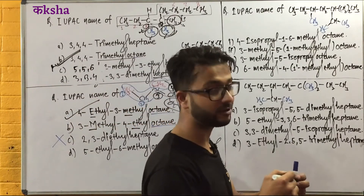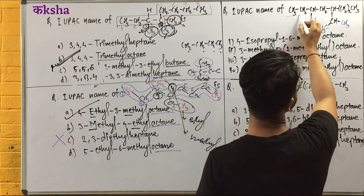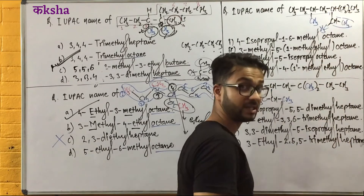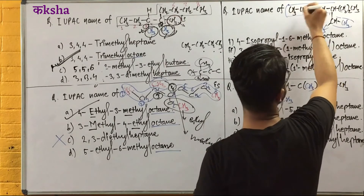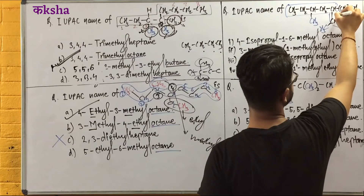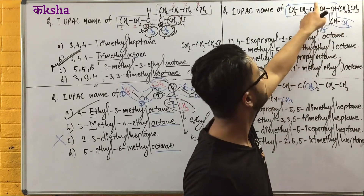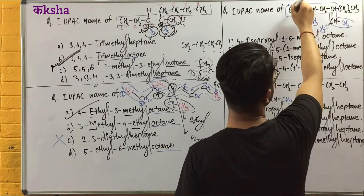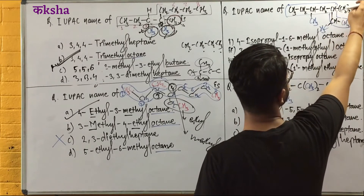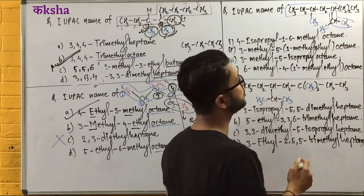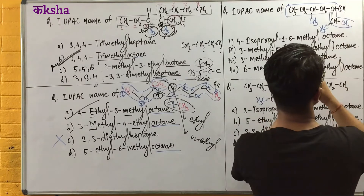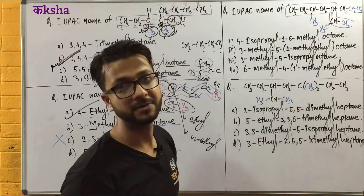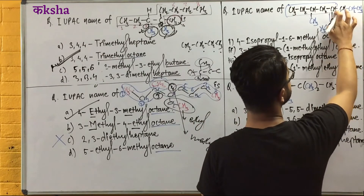The longest and continuous carbon chain selection — what is it? You can see it here. 1, 2, 3, 4, 5, 6, 7. You can see it here. 1, 2, 3, 4, 5, 6. You can see it here, and then you can see it here — what is it? There is a little bit of that.